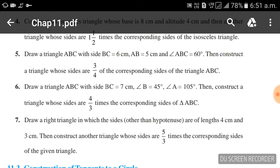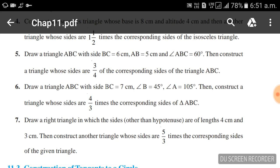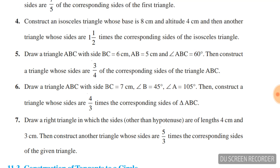Next question: draw a right angle triangle in which the sides other than the hypotenuse are 4 cm and 3 cm, then construct a triangle whose sides are five-thirds times the corresponding sides of the given triangle.